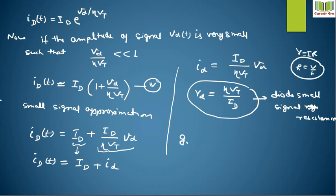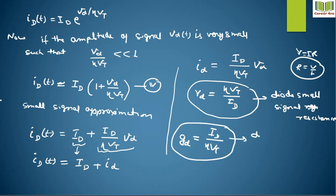And Gd is the diode small signal conductance. Gd equals ID / η·Vt. This is also known as the diode small signal transconductance.